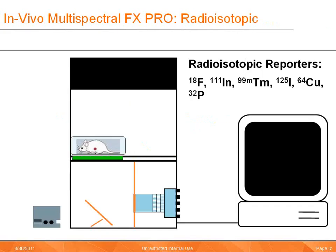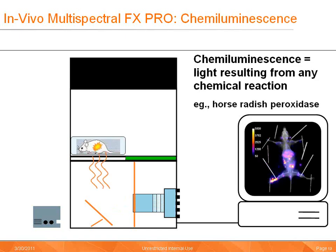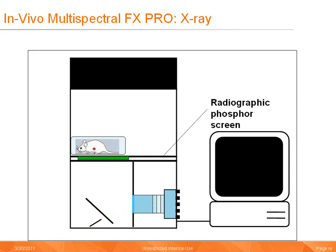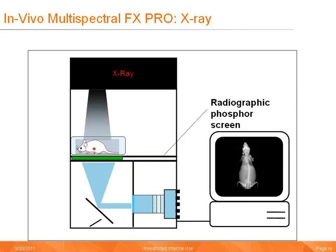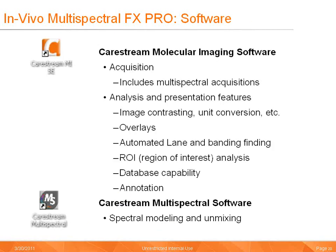For radioisotopic detections, a phosphorus screen slides between the sample and the detector, and the energy is converted to photons for detection. For luminescence detections, the sample is held in a light-tight environment and detection occurs again at an inverted right angle. For X-ray detection, a phosphorus screen slides between the sample and detector; X-ray is applied overhead and the phosphorus converts energy into photons for detection. The in vivo multispectral FX system employs two software packages: the CareStream Molecular Imaging software for driving acquisitions and data analysis, and the CareStream Multispectral software for post-acquisition modeling, unmixing, and image presentation of multispectral data.